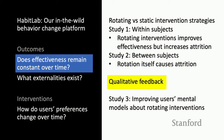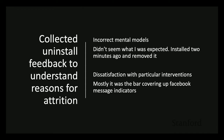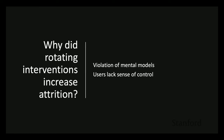To investigate why intervention rotation causes attrition, we sought qualitative feedback from uninstall surveys. Key themes we observed were that users had incorrect mental models — one user said 'didn't seem what I expected, installed two minutes ago and removed it' — and dissatisfaction with particular interventions. We believe the causes for attrition are that we're violating users' mental models, and that users lacked a sense of control over their interventions.